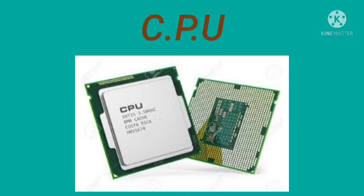CPU: The CPU, alternately referred to as a processor, central processor, or microprocessor, is the central processing unit of the computer. It handles all instructions received from hardware and software. The CPU is considered the brain of the computer. It performs all types of data processing operations, stores data, intermediate results and instructions, and controls the operation of all parts of the computer. It is a small piece of silicon chip placed into the CPU socket on the motherboard.